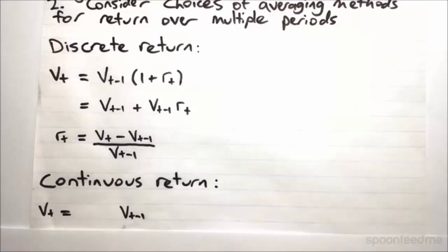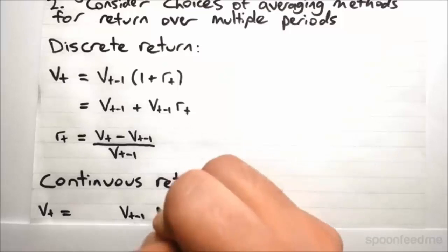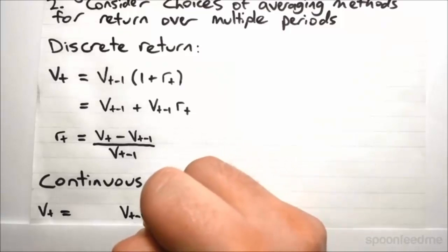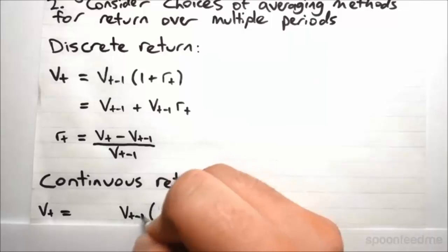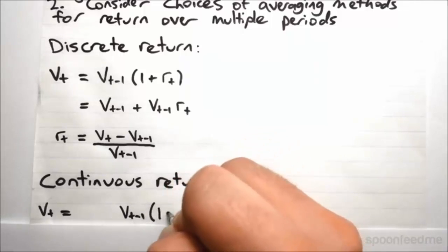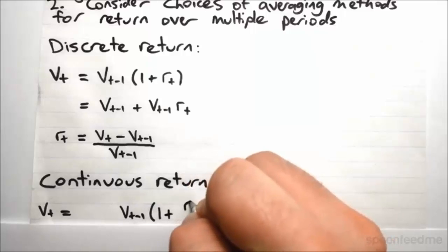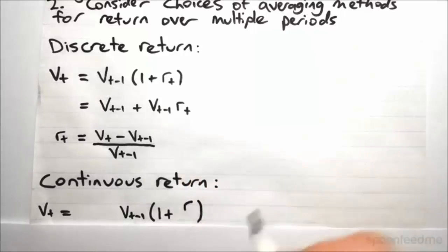We're going to actually start out by taking a similar approach, pretty much the same approach as we did with the discrete return. So we'll say that we've got our previous return, we multiply by 1 plus r. But just imagine that we do not want to say that the interest kicks in over one period.